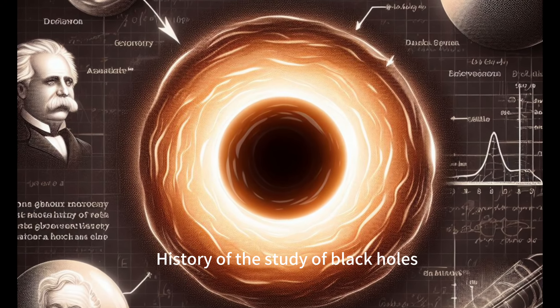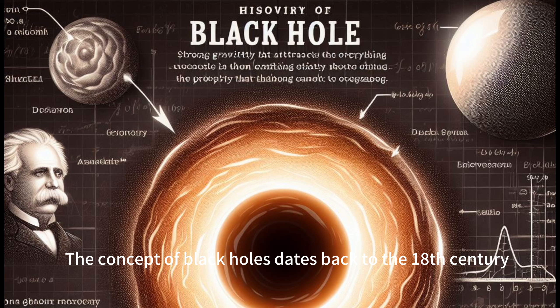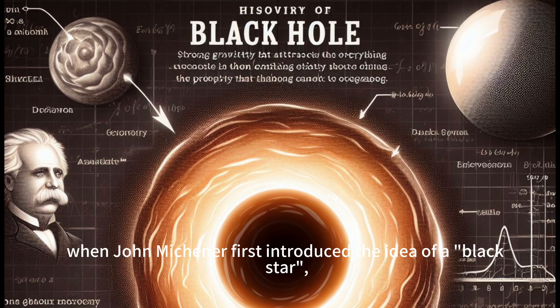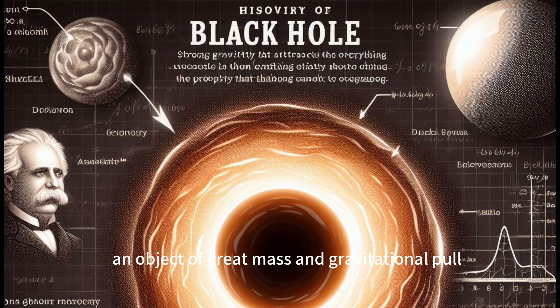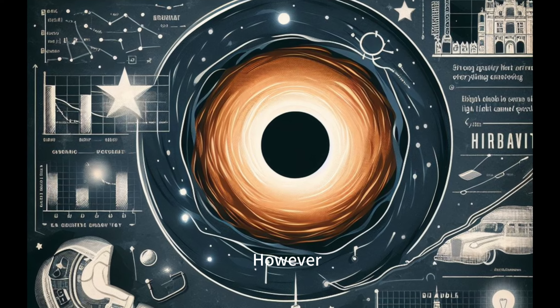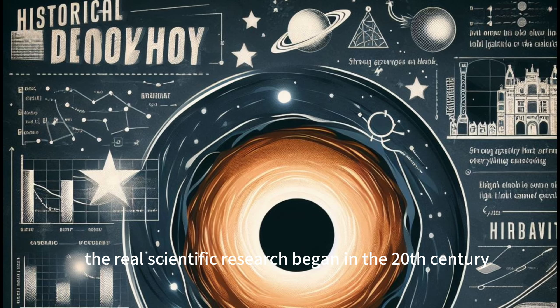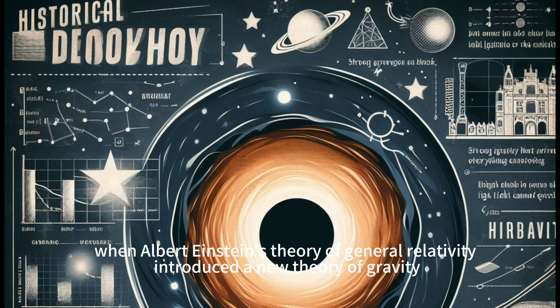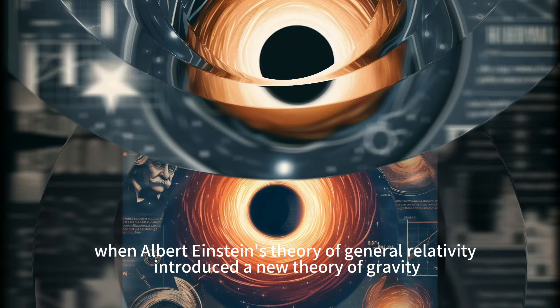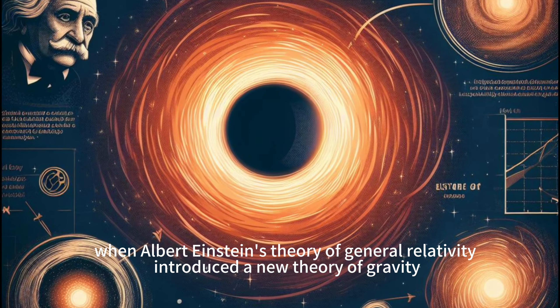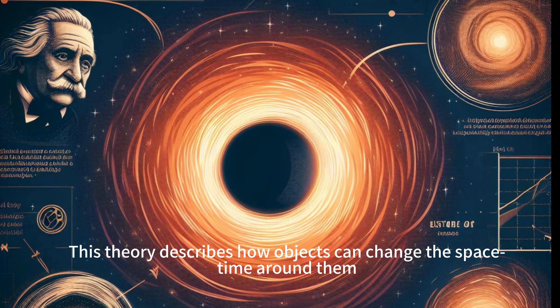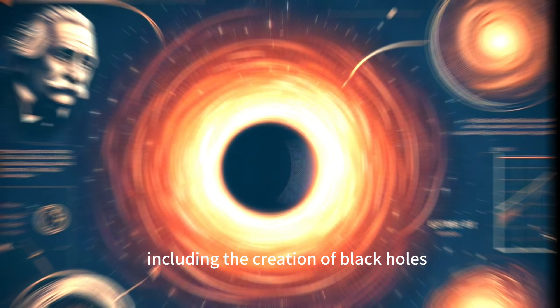The concept of black holes dates back to the 18th century, when John Mishner first introduced the idea of a black star, an object of great mass and gravitational pull. However, the real scientific research began in the 20th century, when Albert Einstein's theory of general relativity introduced a new theory of gravity. This theory describes how objects can change the space-time around them, including the creation of black holes.